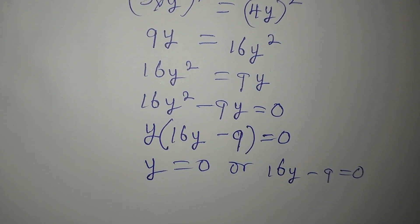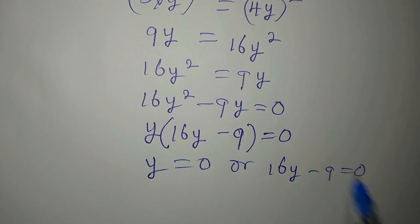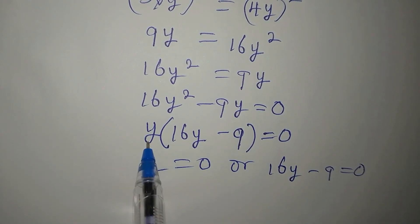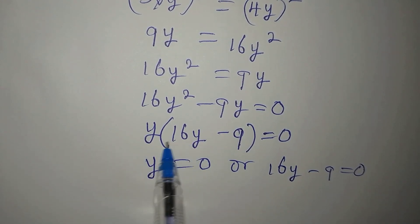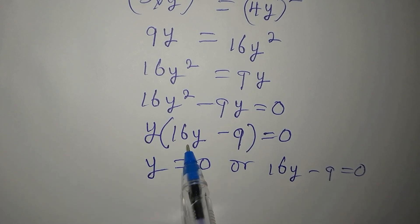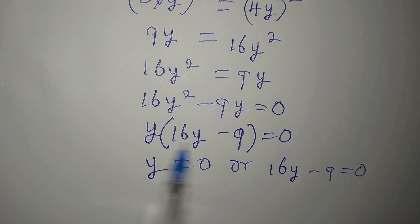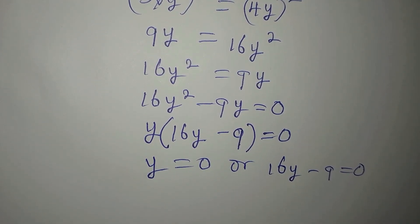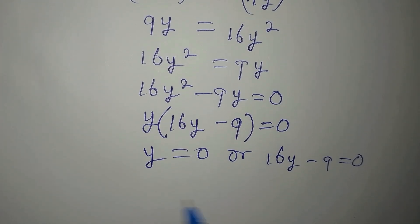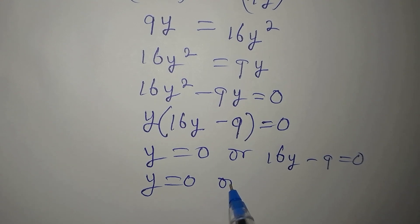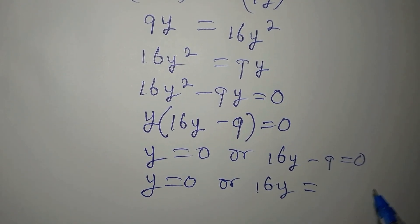Setting each factor equal to zero: y equals 0, or 16y minus 9 equals 0. This is because we are multiplying both terms to get 0, so either of them must be 0, or both can be 0.